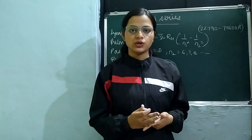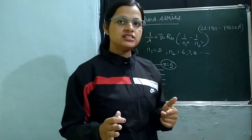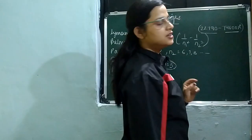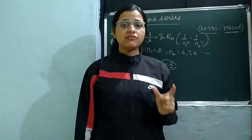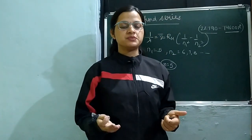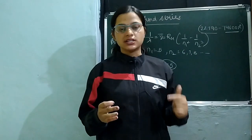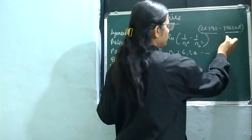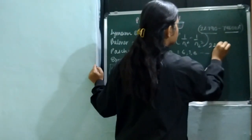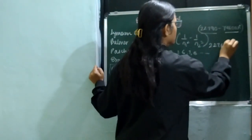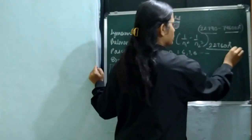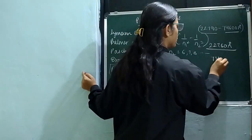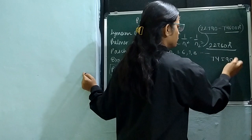Now if we talk about shortest wavelength and longest wavelength: the longest wavelength is 22790 to 74600 Angstrom units — that is the longest wavelength. The shortest wavelength is 22780 Angstrom units, and the longest wavelength which comes out is 74590 Angstrom units.